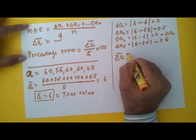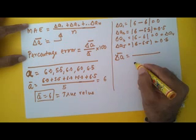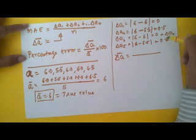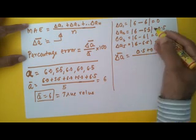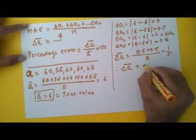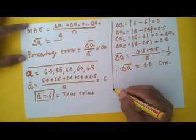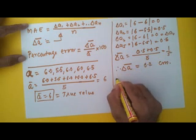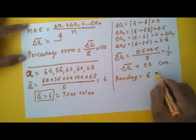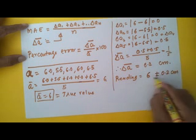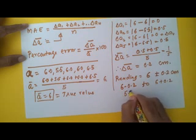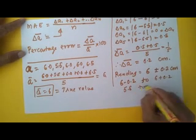To find the mean absolute error, delta a bar, I add up all the errors and divide by n. So 0 plus 0.5 plus 0 plus 0 plus 0.5 equals 1. Divided by the number of readings, which is 5, I get 1 divided by 5. Therefore, delta a bar equals 0.2 centimeter. So the reading will be mentioned as: the true value is 6, expressed as 6 plus or minus 0.2 centimeters. That means the length is between 5.8 and 6.2 centimeters.